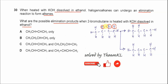Now, if there is an elimination — if this bromine and this hydrogen get eliminated — you form but-1-ene. If this bromine and these hydrogens get eliminated instead, you form but-2-ene.